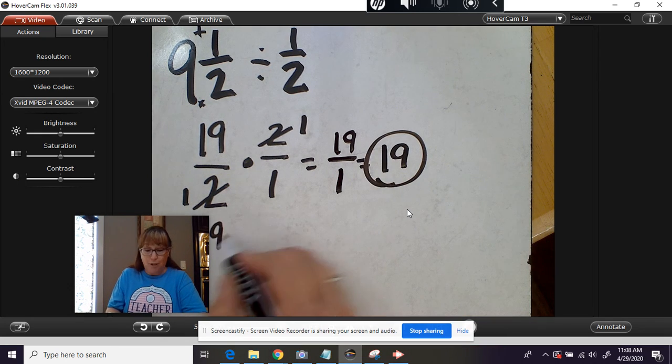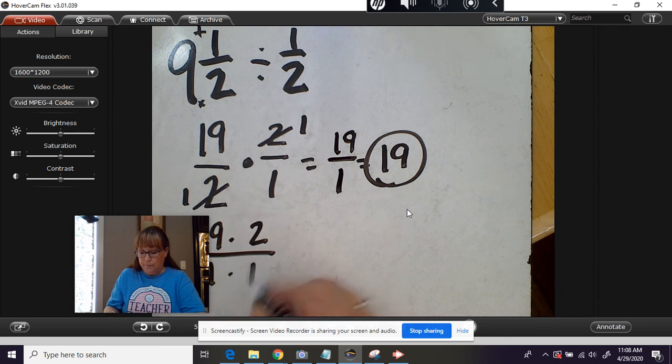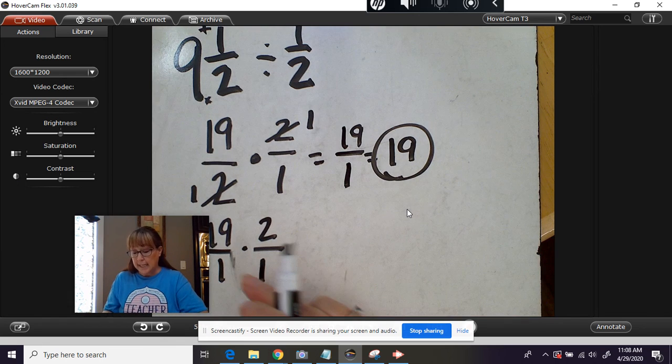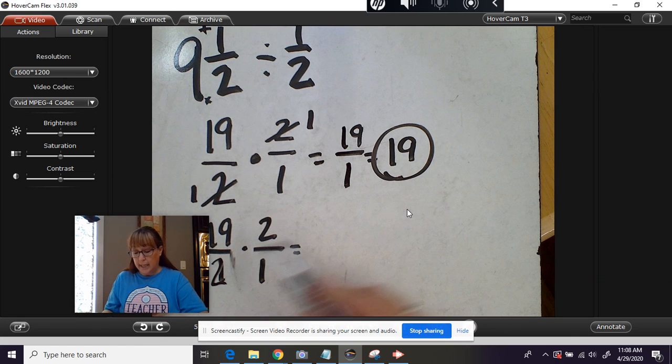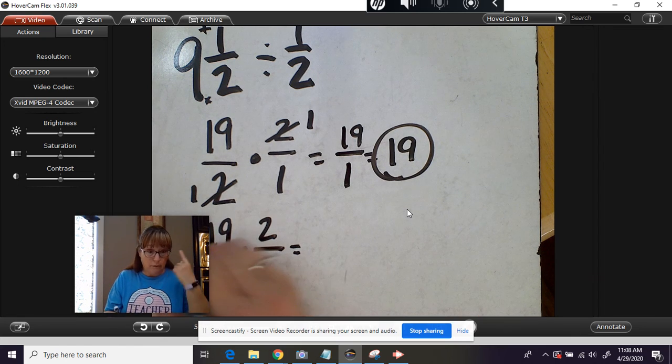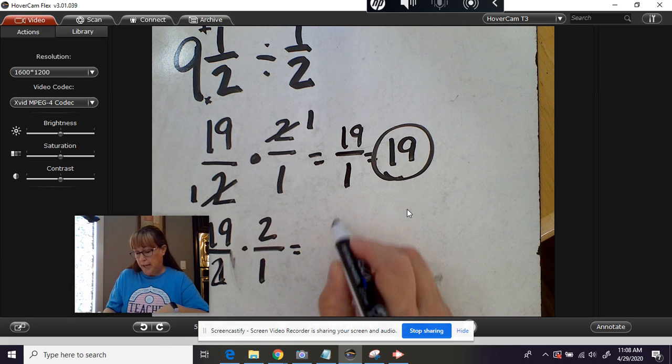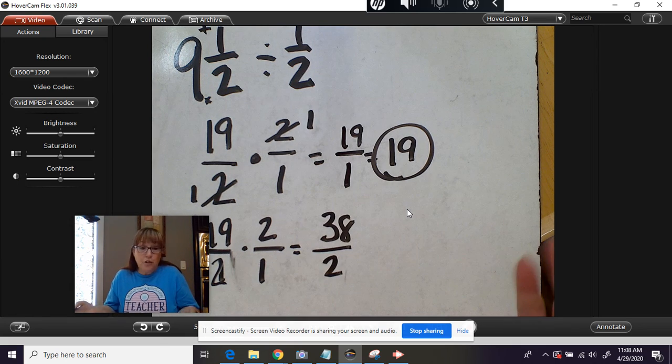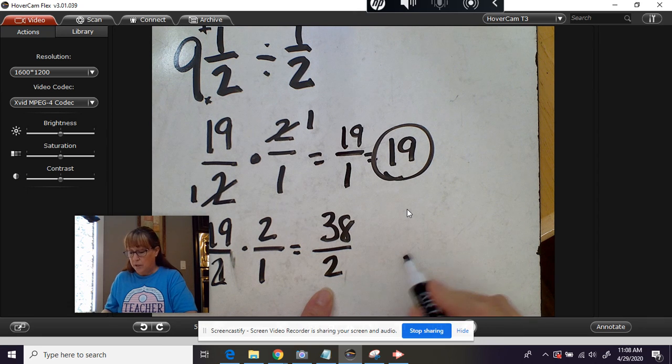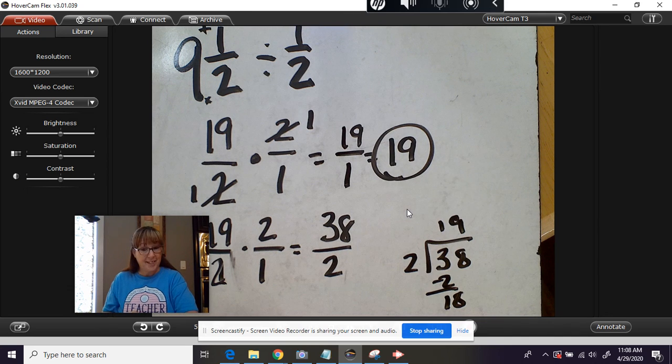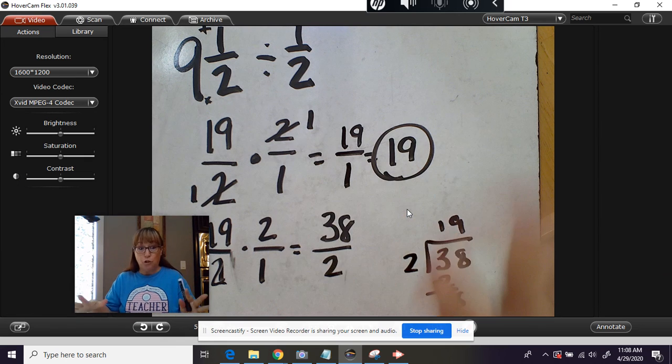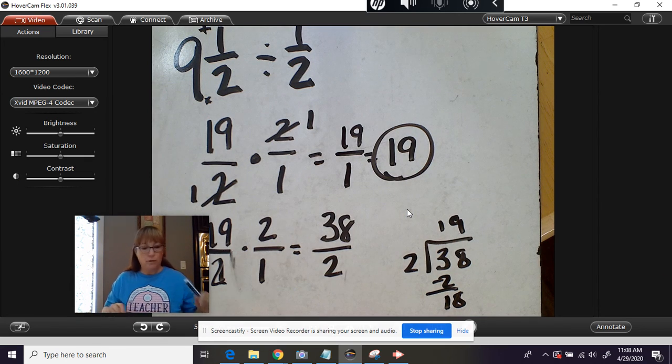Now let's say you didn't do that. You left it just like this, and you said, okay, 19 times two is, let's see, I had to do it off to the side because I don't know in my head. That's 38. 38 over two. Then you just do your division. How many twos are in 38? If you did your division, you would have gotten the same answer, 19. So either way is fine. If your brain thinks like this, do that route. If your brain thinks like this, do that one, totally fine.